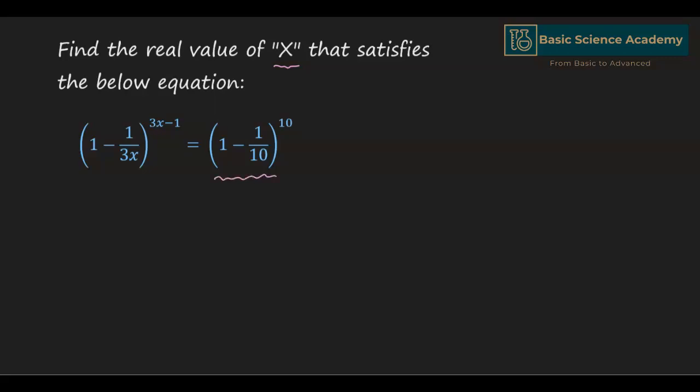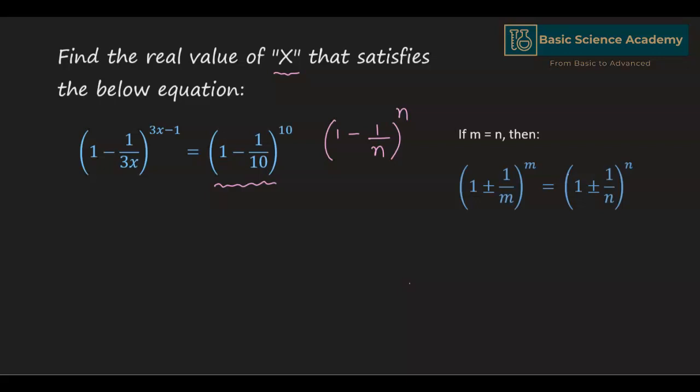The right side is in the form 1 minus 1 by n to the power of n. According to the law of exponents, if m is equals to n, then we can write 1 plus or minus 1 by m to the power of m is equals to 1 plus or minus 1 by n to the power of n. So if we convert the left side into the form of 1 minus 1 by m to the power of m, then we can equate both sides.